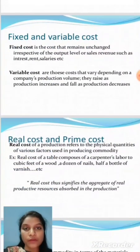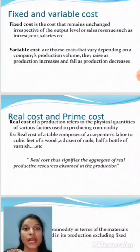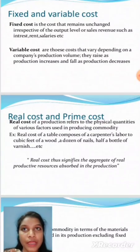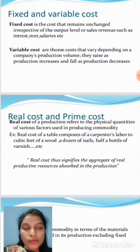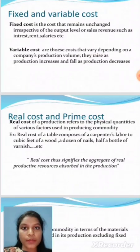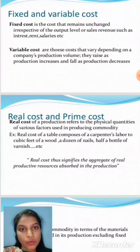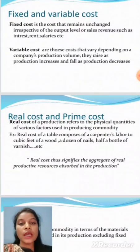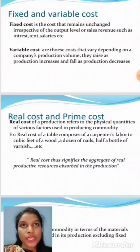Next, fixed and variable cost. Fixed cost is the cost that remains unchanged irrespective of the output level. For example, if we are producing on 1 acre of land, whether we produce 100 units or 200 units or 300 units, the land remains 1 acre. The land is the fixed factor, so this cost remains fixed whatever the level of output.